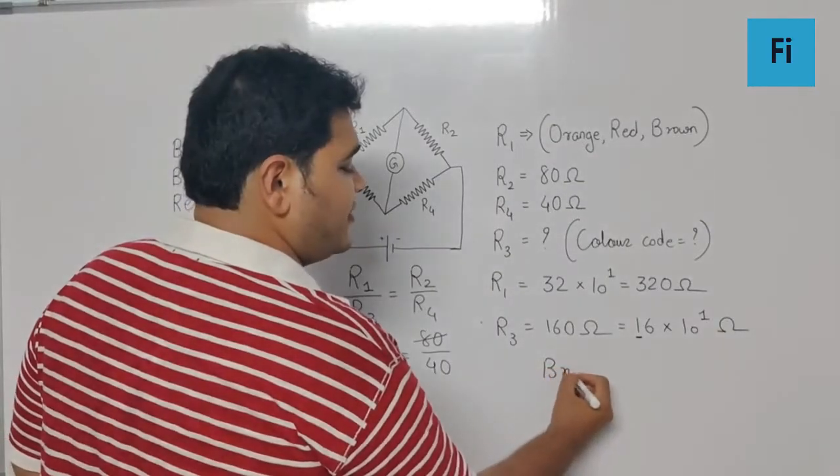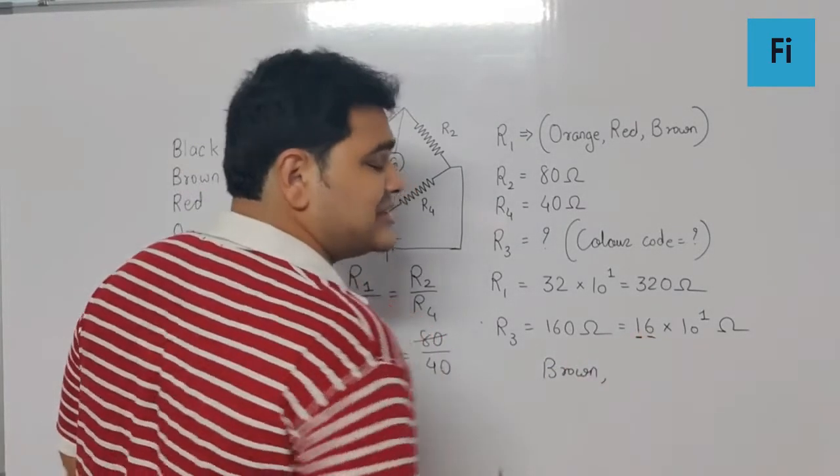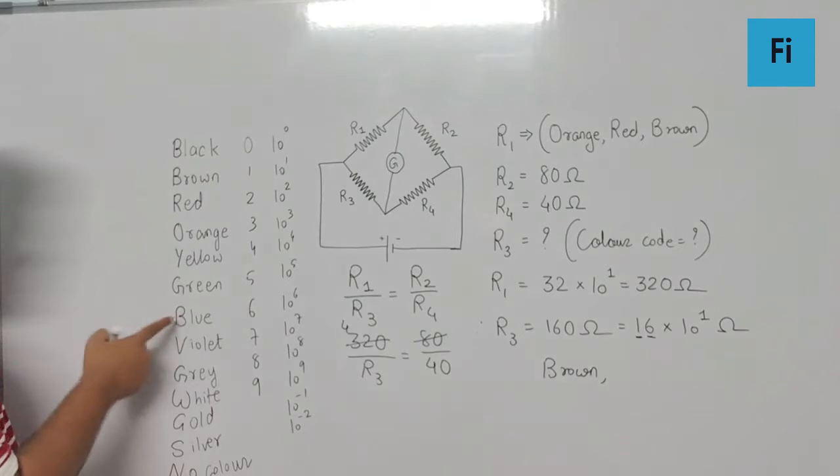Then we have a number 6, so 6 represents blue. So the second band will be of blue color.